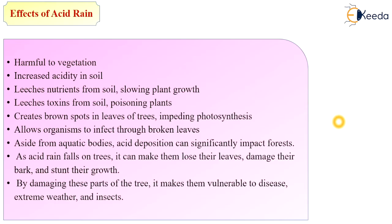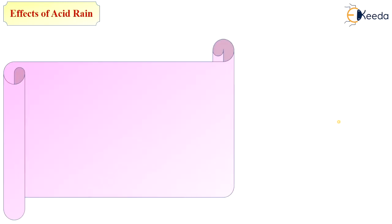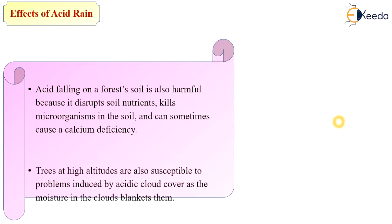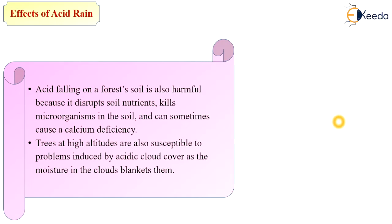We must stop the formation of acid rain. Acid falling on forest soil is also harmful because it disrupts soil nutrients, kills microorganisms in the soil, and can sometimes cause a calcium deficiency. Trees at high altitude are also susceptible to problems caused by acid cloud cover as moisture in the clouds blankets them.